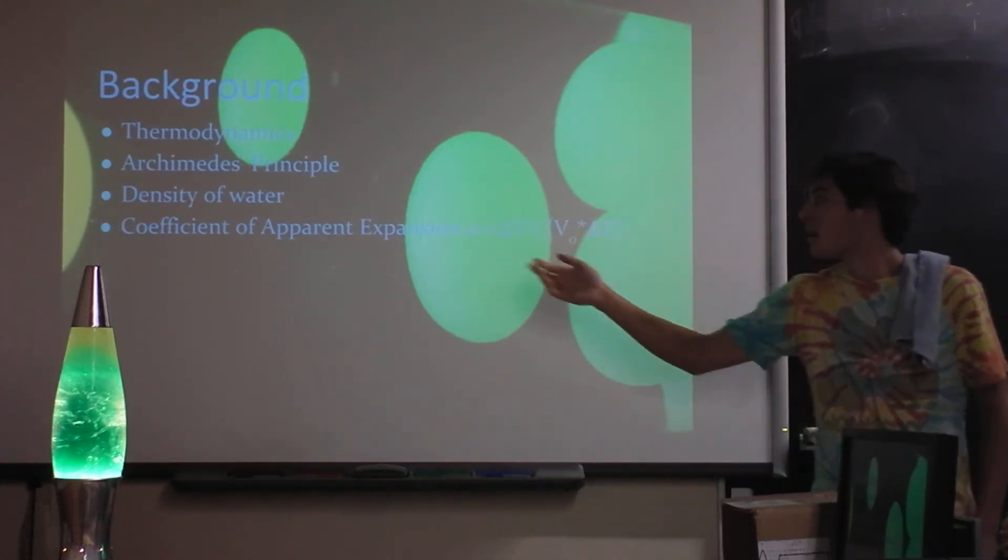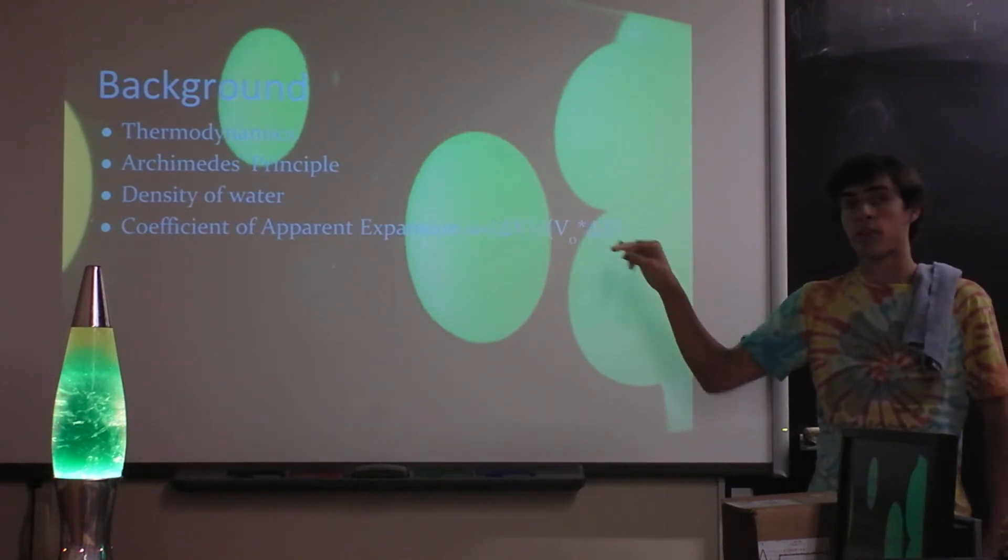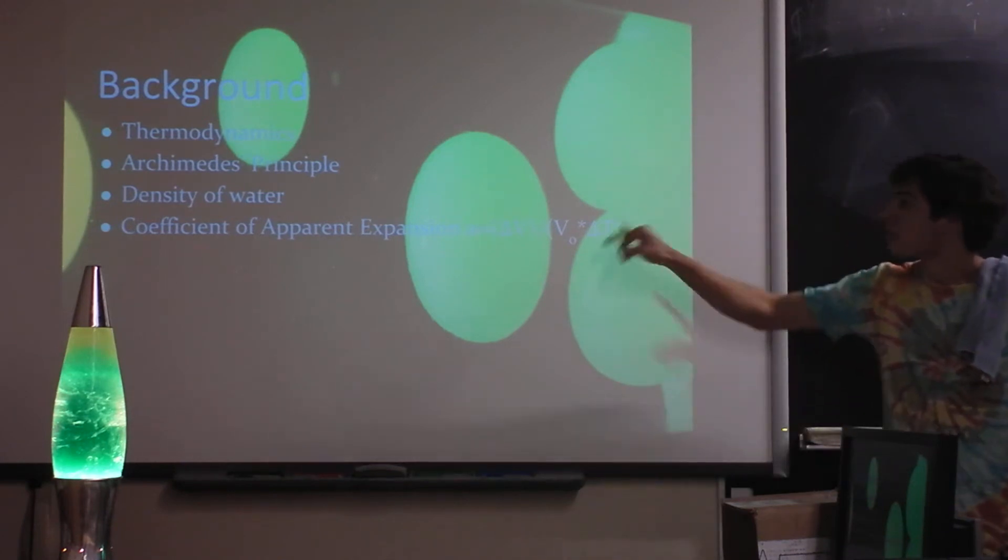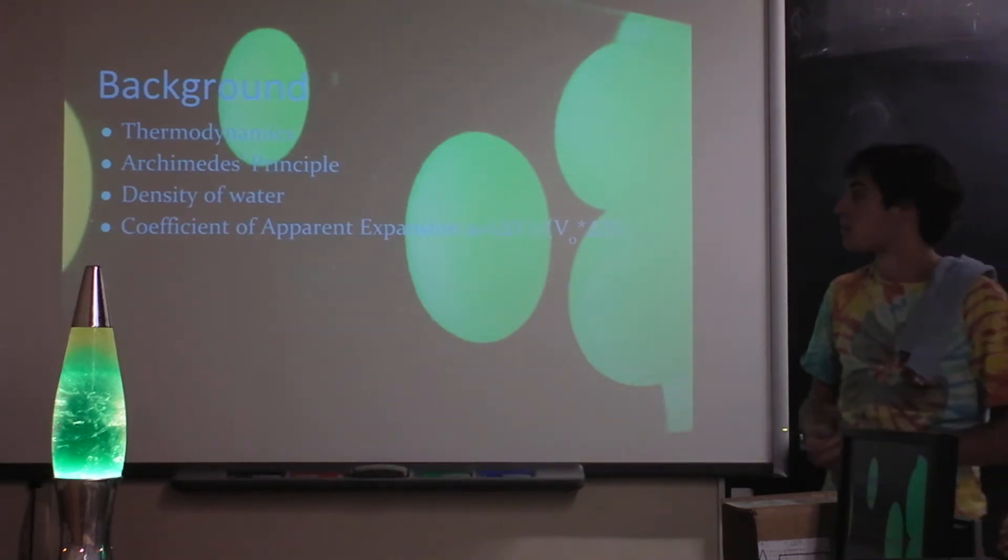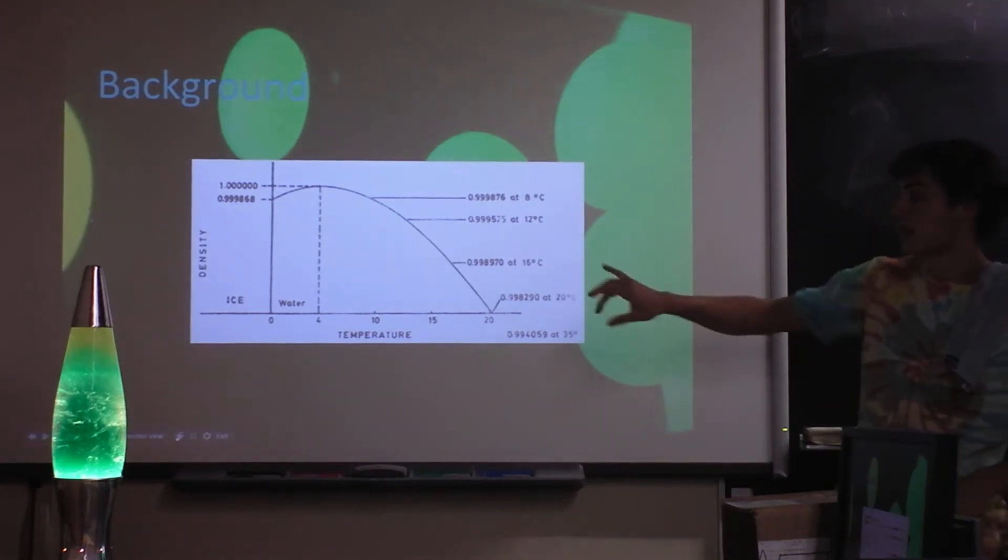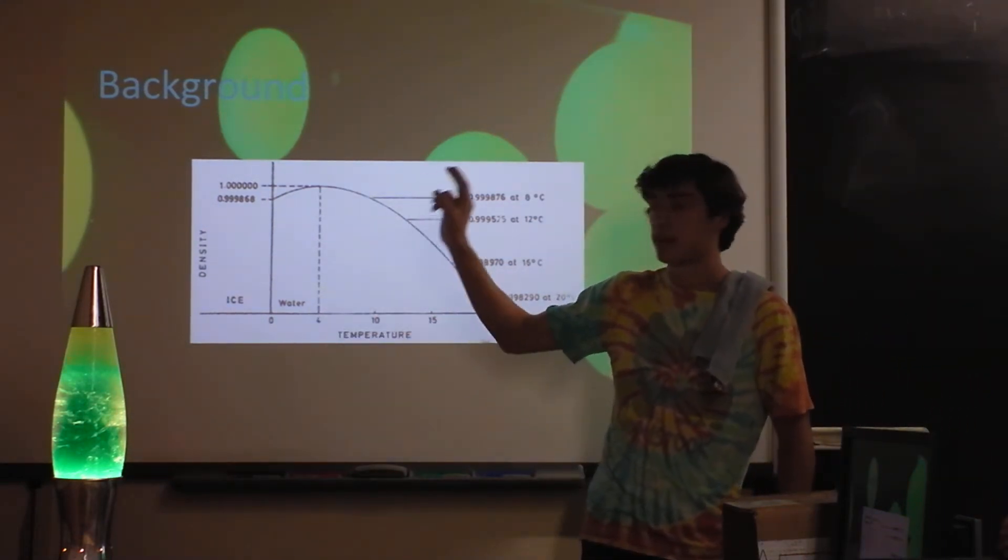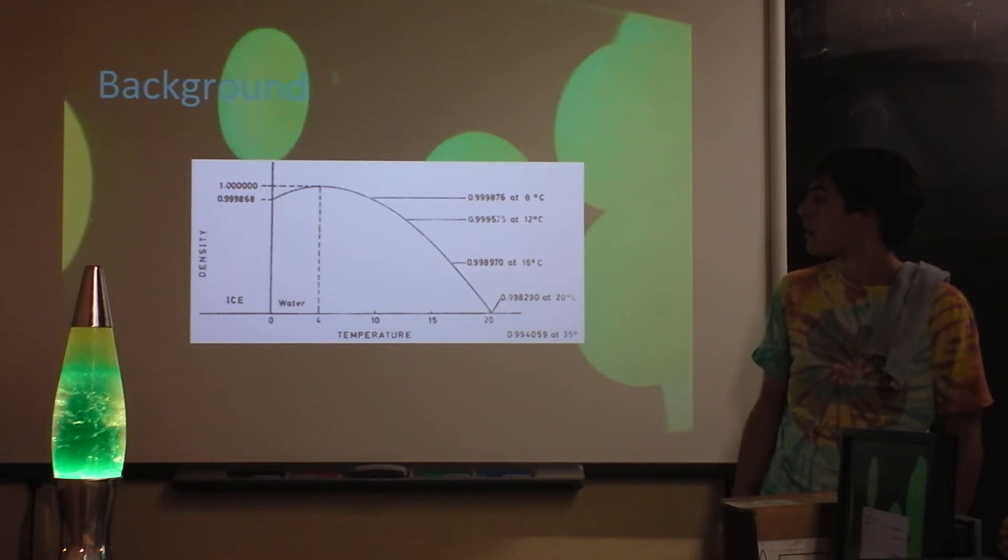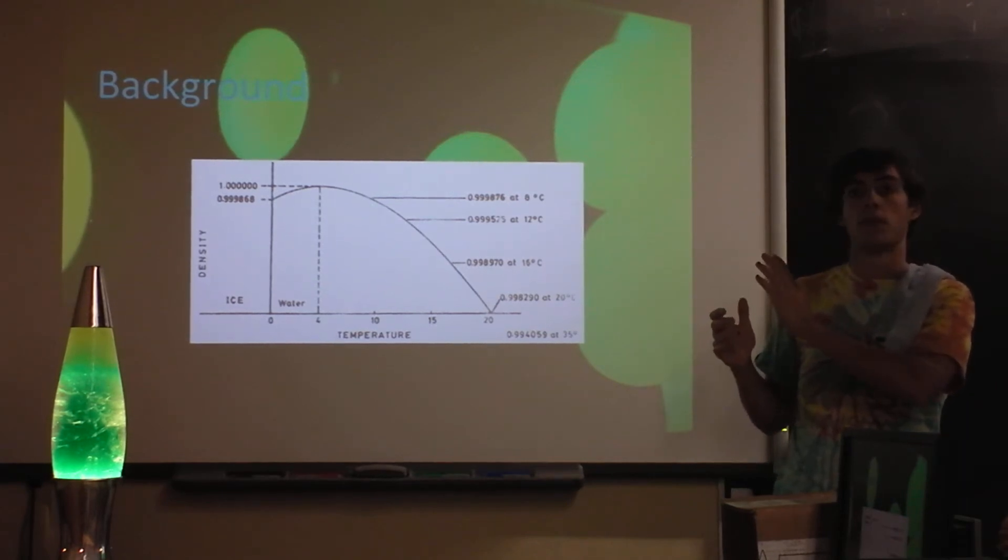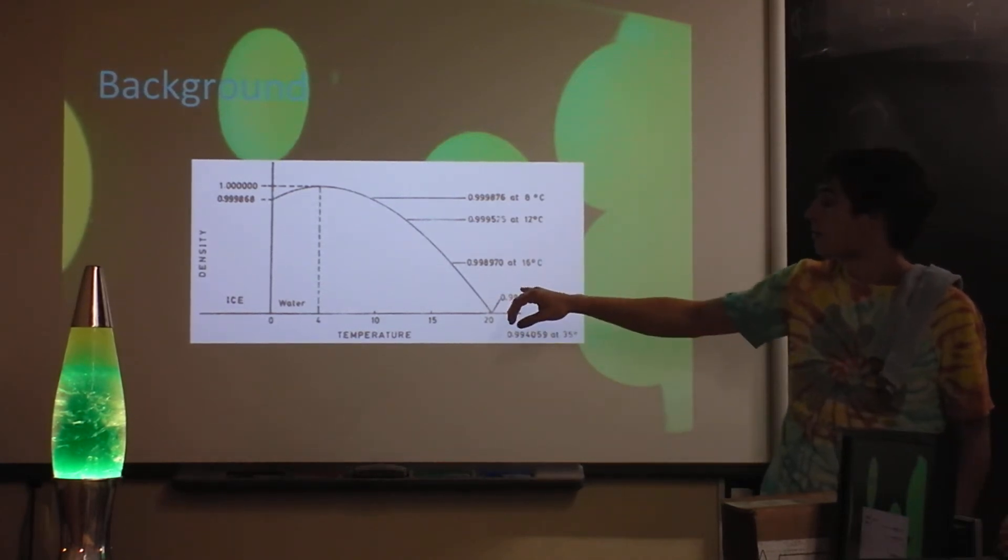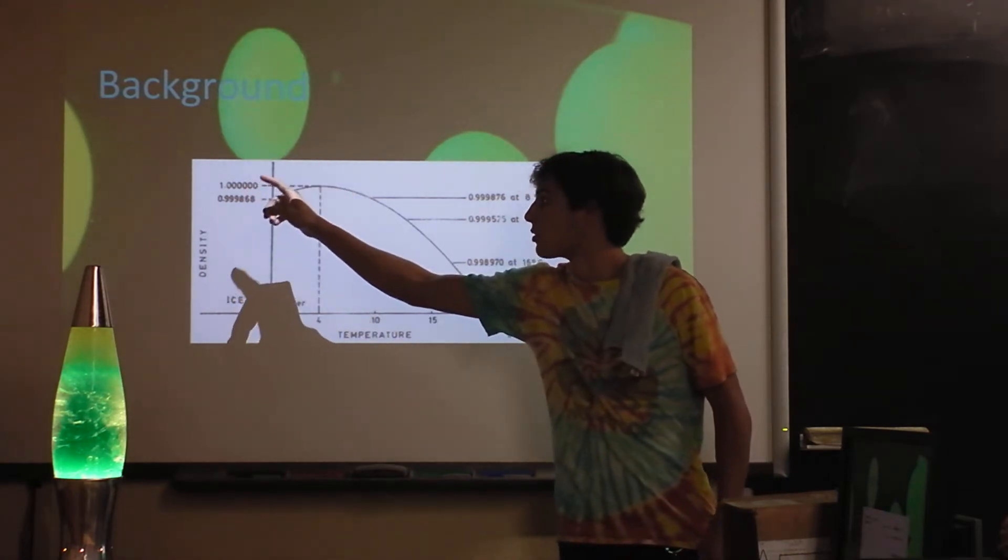The coefficient of apparent expansion is represented by A there. And what you do is you take the change in volumes of a liquid and divide it by the original volume times the change in temperature of the time period where it changed the volume. And so this is an image that represents the density of water at different temperatures. And so at four degrees Celsius, it's at its maximum density. And since I wanted to obviously, if you get super hot and stuff, it'll contract more. But I wanted to make it cold. So you have to get it past four degrees Celsius before it starts to contract again.